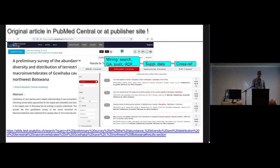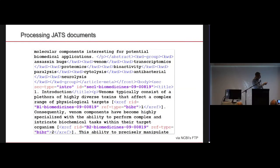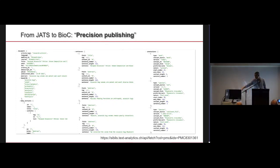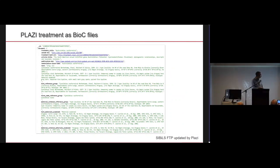Probably 50% of the people searching in SiBILS are looking for content in supplementary data — that was not expected. We have many cross-references to Plazi, publishers, and others. We work with the JATS native format for publication. We developed something called precision publishing: we annotate entities, for example species names with their offset positions — where they start and end in the text. This is what we call evidence-based publication, and it's the same approach we apply with taxonomic treatments.